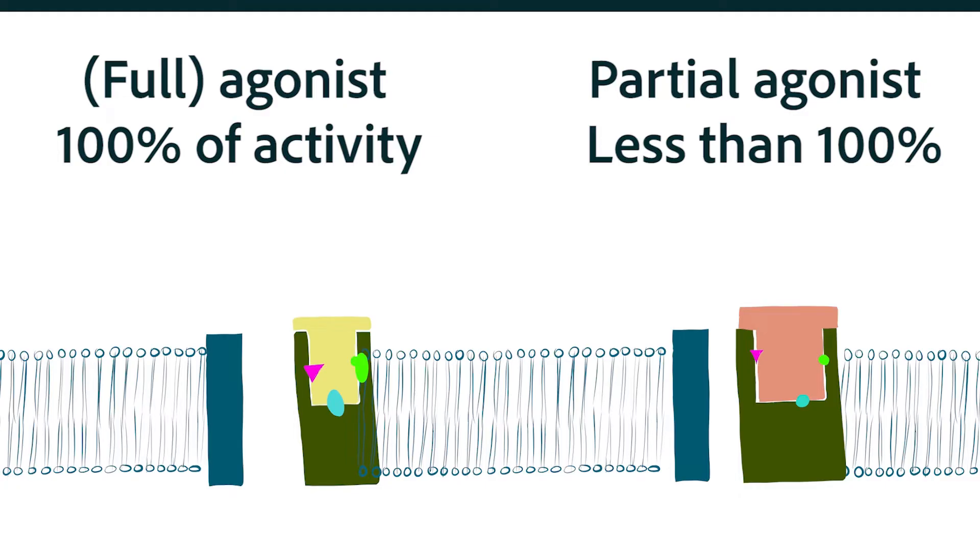Partial agonists don't reach 100% of the effect that the natural ligand did, even if all of the receptors are bound.